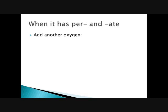If a name has 'per' in front of the -ate, it means you add another oxygen. So perchlorate is ClO₄ with a negative one charge — the charge stays the same, but we increase the number of oxygens. We also have peroxide, which is O₂ with a negative two charge. Oxide ion from Chapter 7 is O with a negative two charge, so peroxide means one additional oxygen was added. Hydrogen peroxide contains this polyatomic ion.